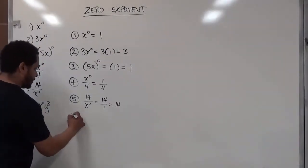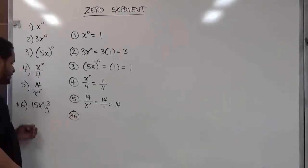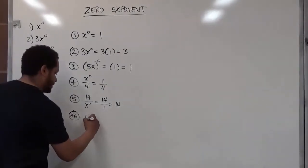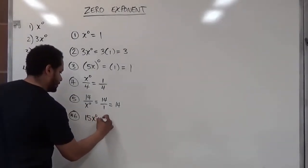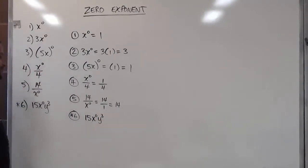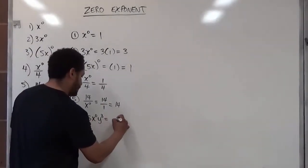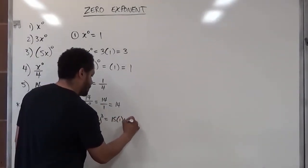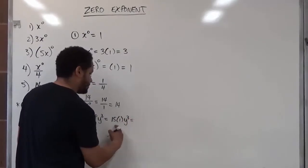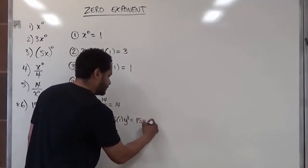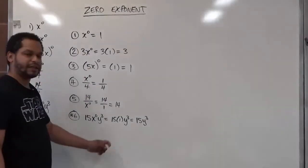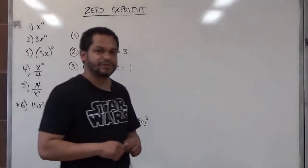Now finally for our bonus problem, number six, the bigger challenge of the problem is one that has an application of the zero exponent next to other things with exponents and a constant. And so here again, just x to the zero becomes a one. So we have fifteen times one times y to the third power, and this becomes fifteen y cubed. And that covers everything you need to know for the zero exponent. Thank you.